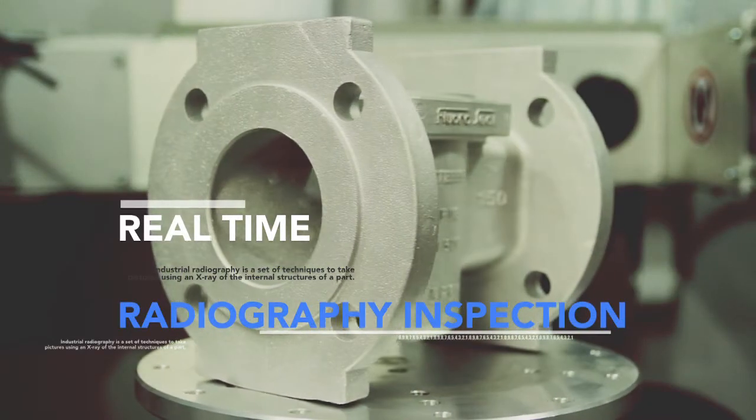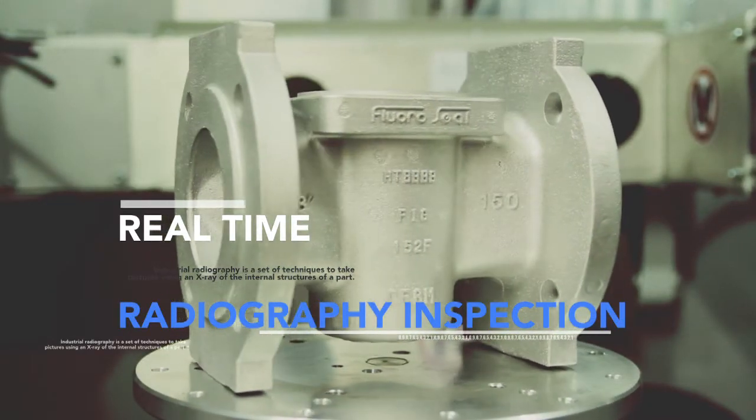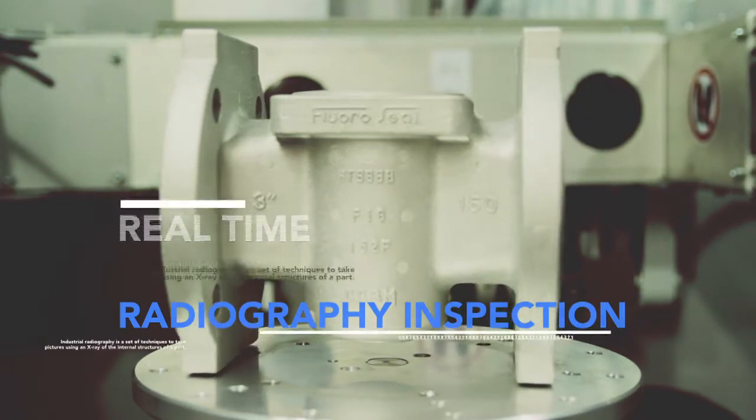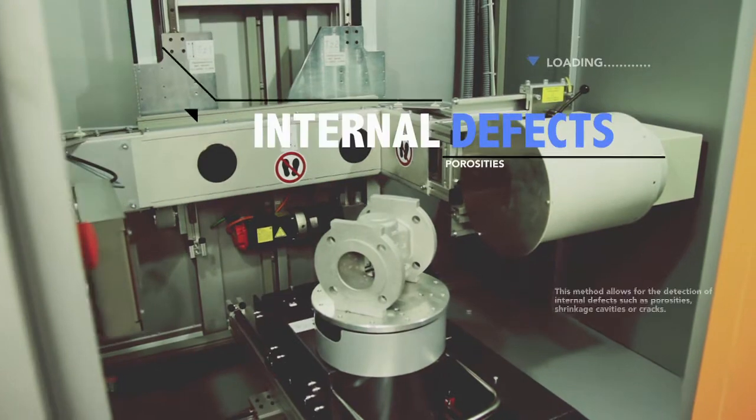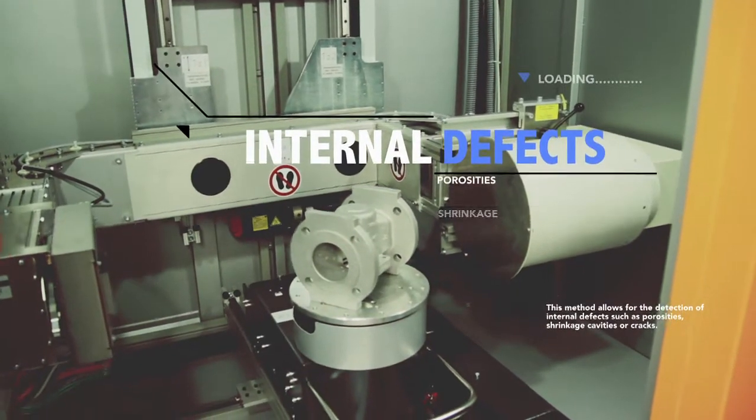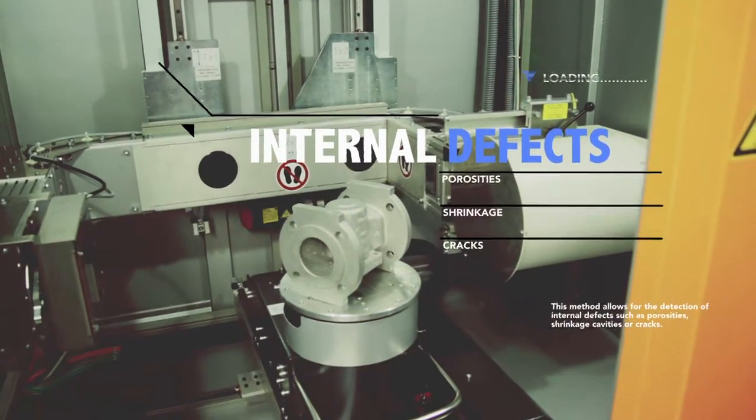Industrial radiography is a set of techniques that takes pictures using an x-ray of the internal structures of a part. This method allows for the detection of internal defects such as porosities, shrinkage cavities or cracks.